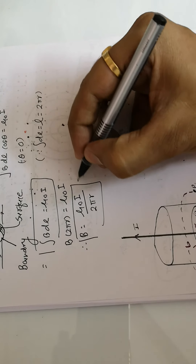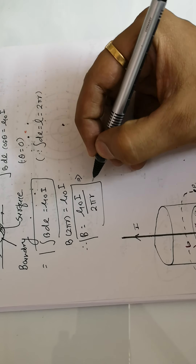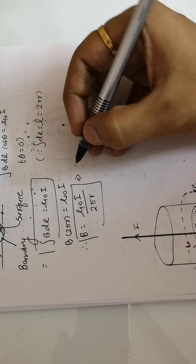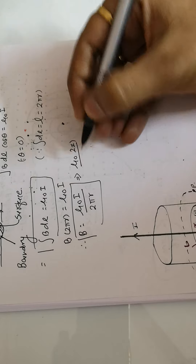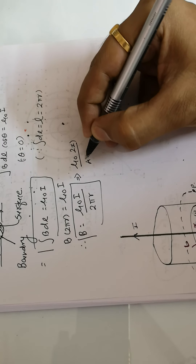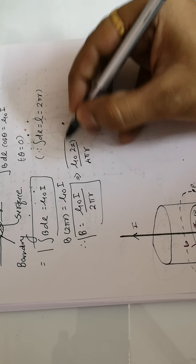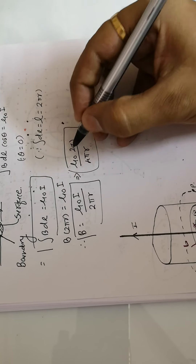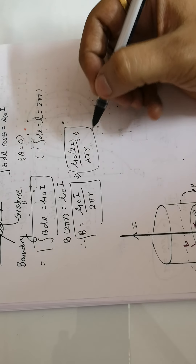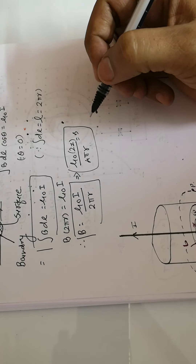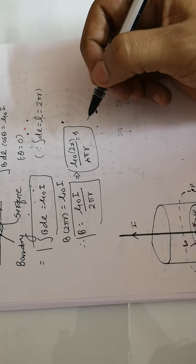Multiplying numerator and denominator by 2, this expression can also be written as B equals mu zero times 2I divided by 4 pi r. Both expressions are equivalent, and you can use either form for the magnetic field.